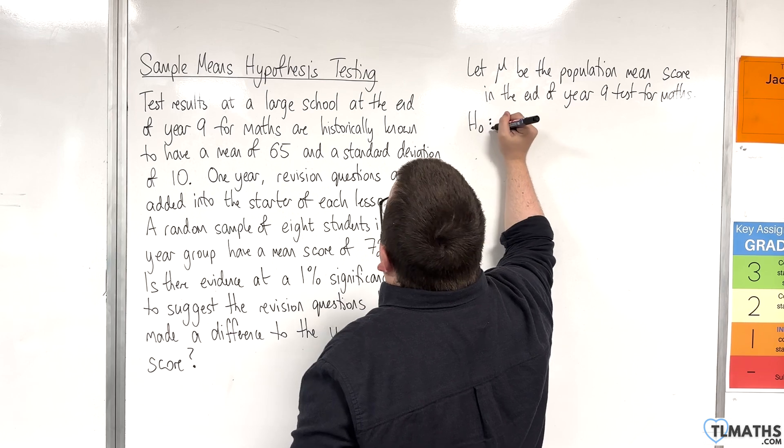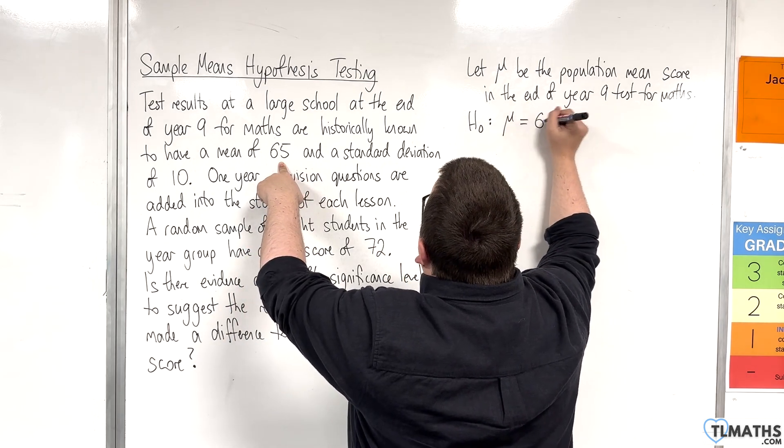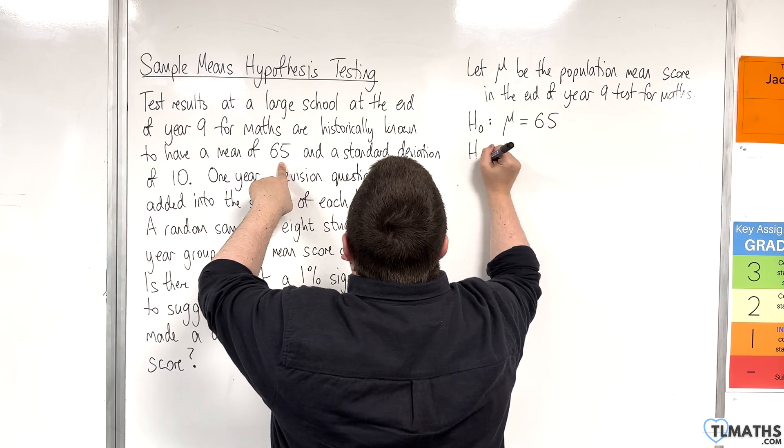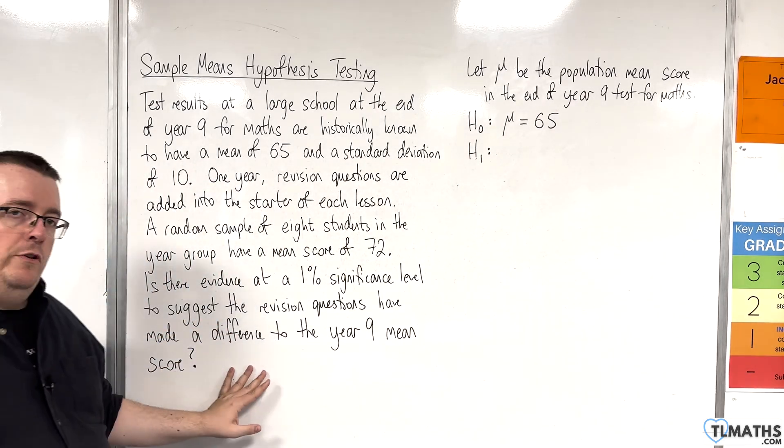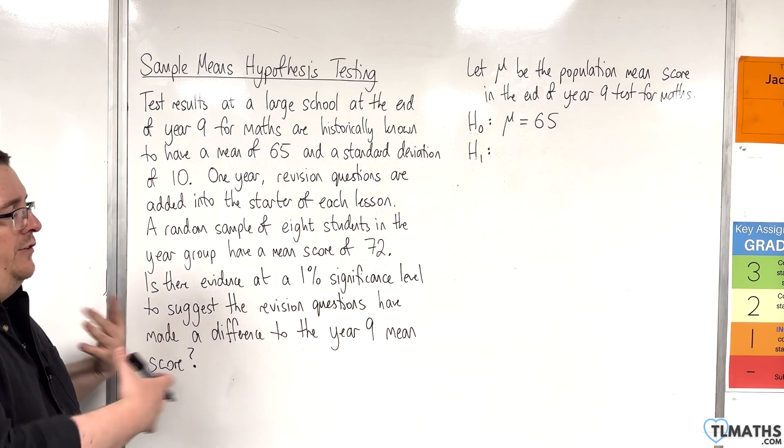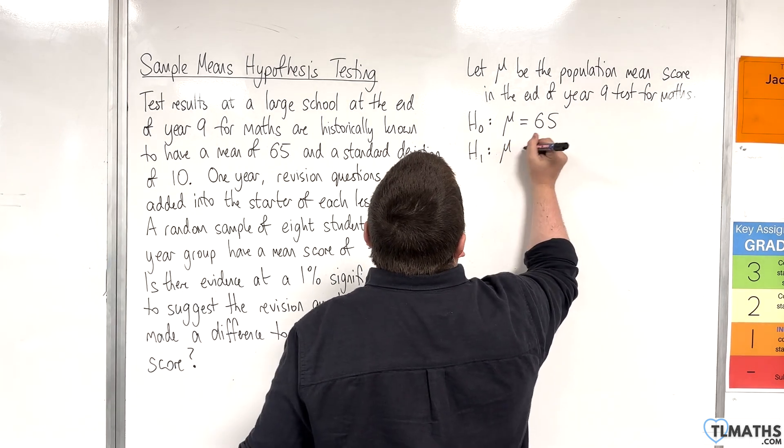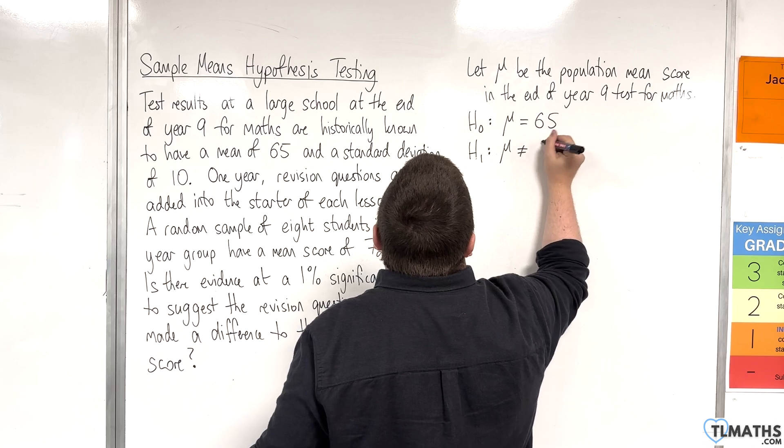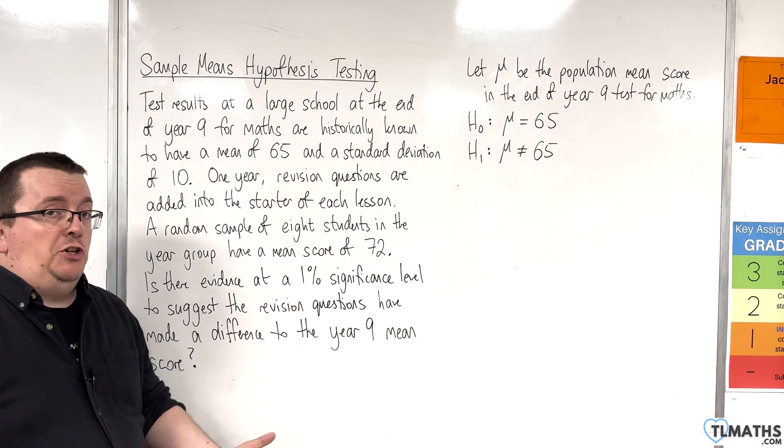So, the null hypothesis is that it hasn't changed. So mu is 65 and the alternative, because we're looking to see whether it has made a difference, that doesn't imply any direction there. So the alternative is that it's not equal to 65. OK, so we're looking at a two-tail test.